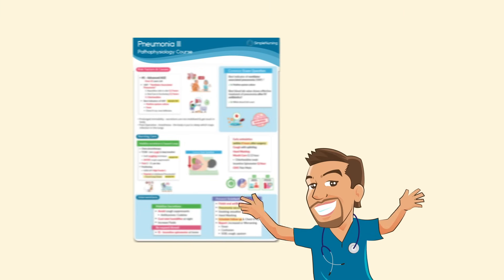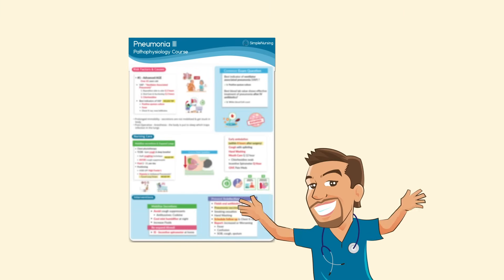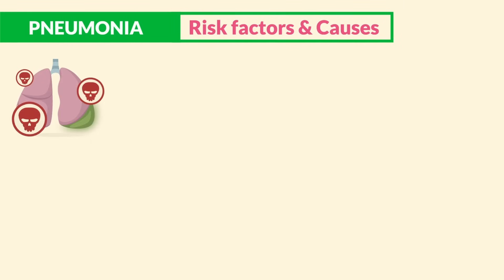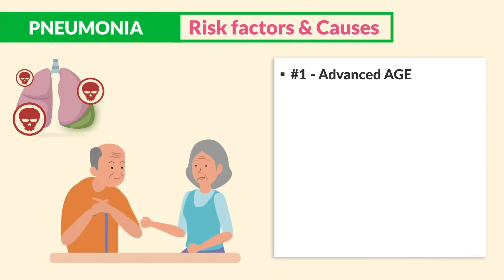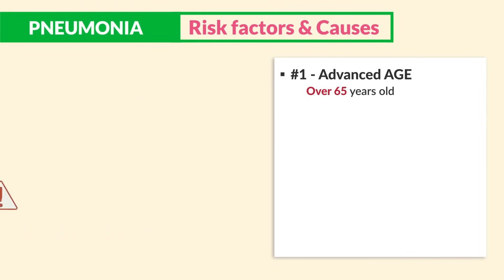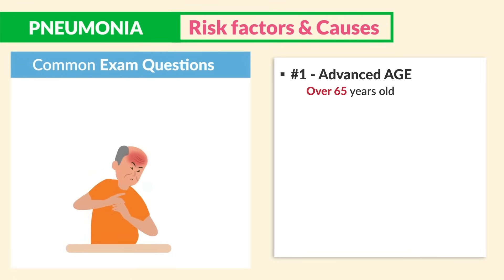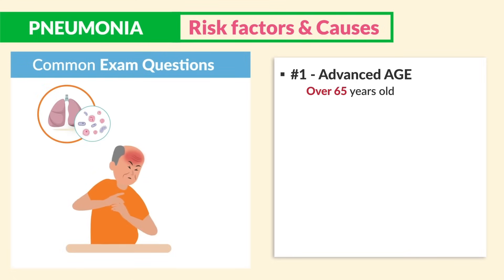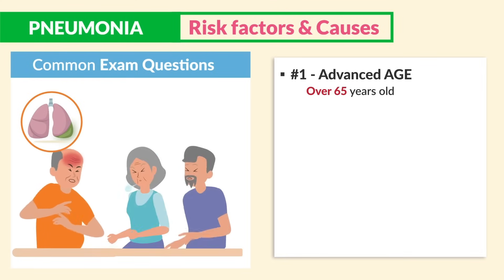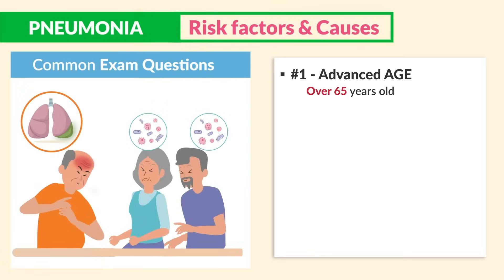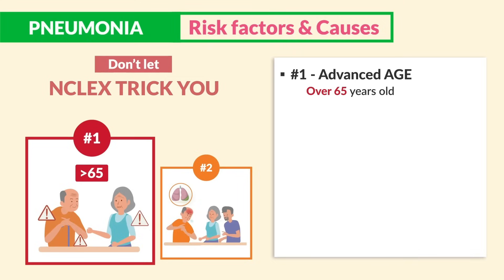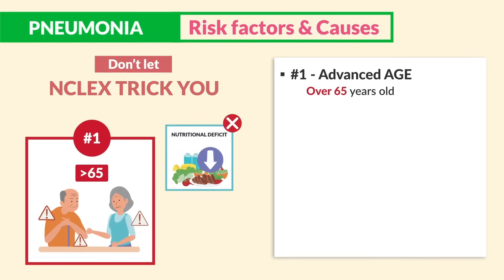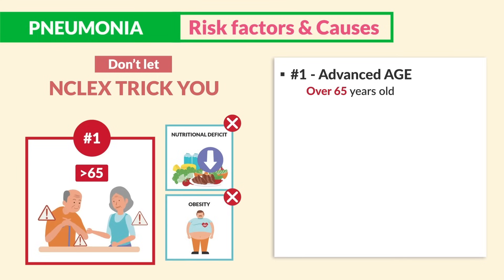In terms of risk factors and causes: the greatest risk factor for pneumonia is advanced age — the key number used on most exams is over 65 years old. Common exam questions give scenarios about an elderly population getting a respiratory tract infection or flu that develops into pneumonia, called community-acquired pneumonia. Don't let the NCLEX trick you — environmental exposures, nutritional deficit, and obesity are not the greatest risk factors; advanced age over 65 is number one.